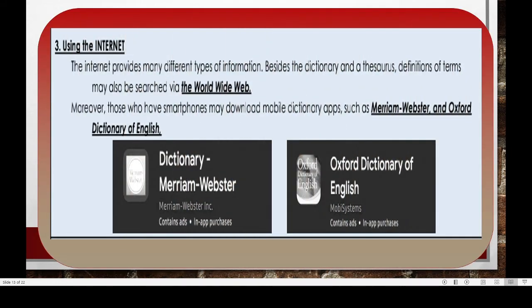Lastly, the most common resource we use nowadays in finding the meaning of difficult words is the internet. The internet provides many different types of information. Besides the dictionary and thesaurus, definitions of terms may also be searched via the World Wide Web. Moreover, those who have smartphones may download mobile dictionary applications such as Merriam-Webster and Oxford Dictionary of English.